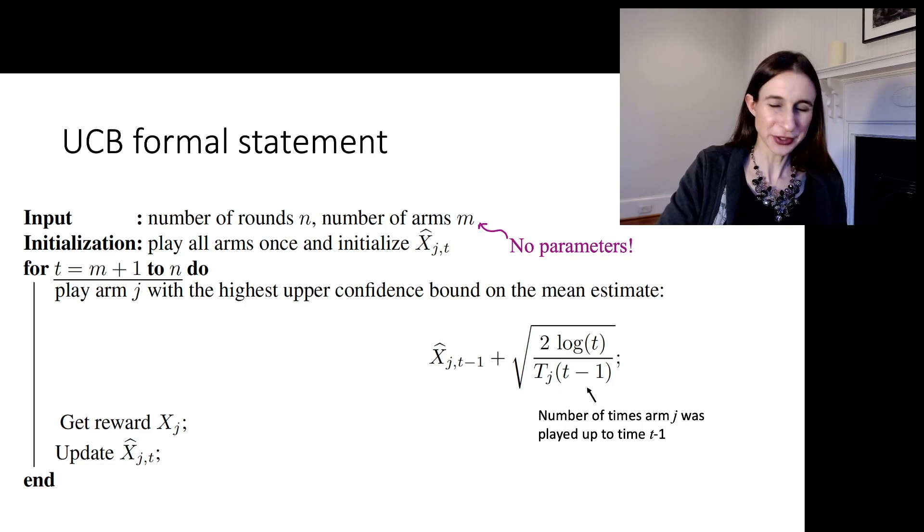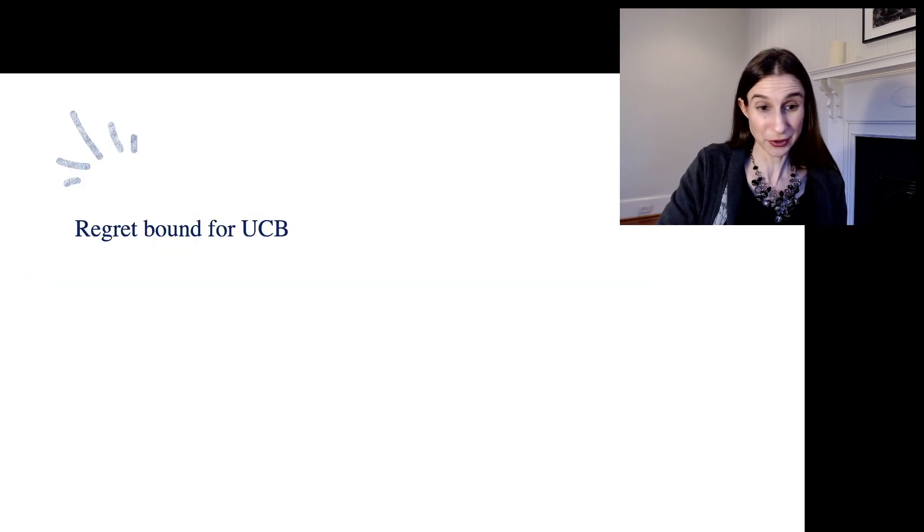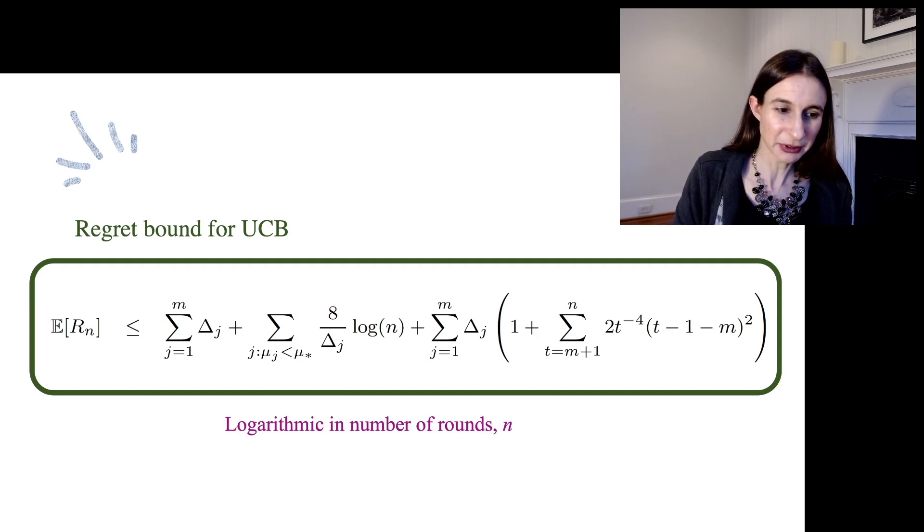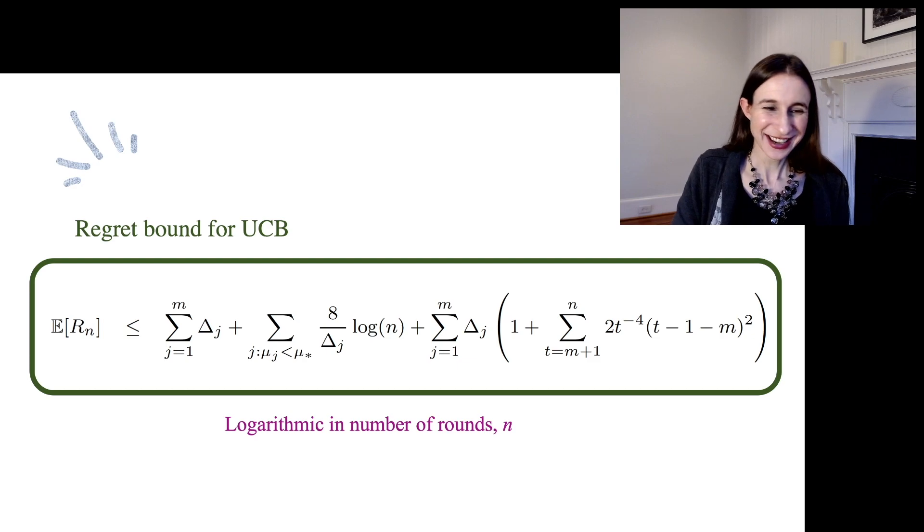Let's switch over to UCB, and you'll notice that UCB has no formal parameters. I'm going to show you the regret bound, and again, there's no parameters in it. But luckily for us, it is still logarithmic in the number of rounds. So how can we see this? The first term is the sum over j of δ_j, so that's just a constant. It doesn't depend on the number of rounds. The second term is clearly logarithmic in the number of rounds. It's just sum over the number of arms, so it's logarithmic in n.